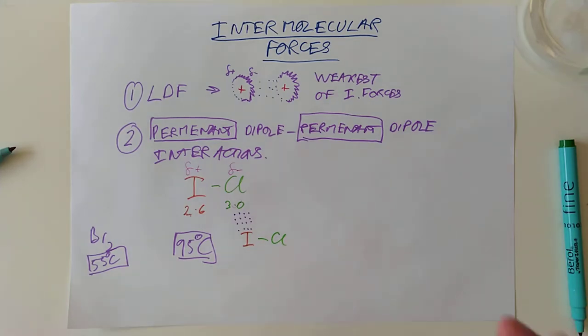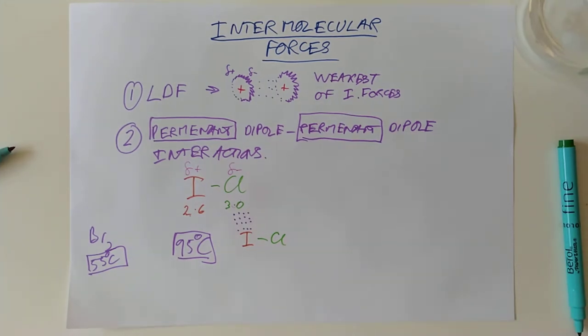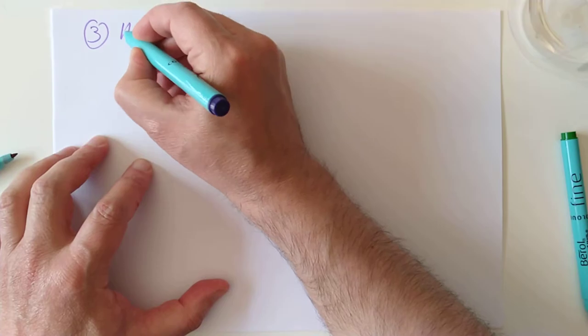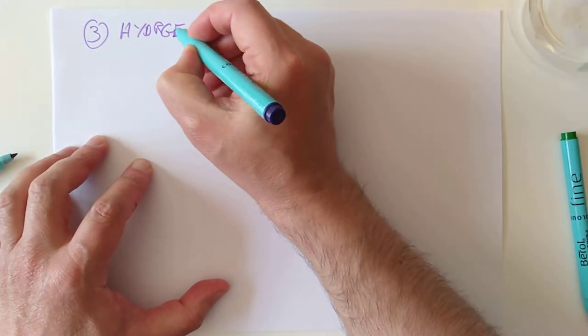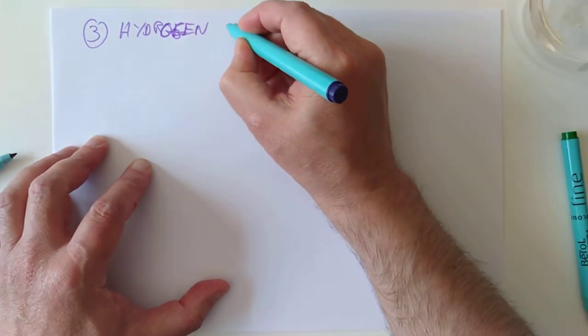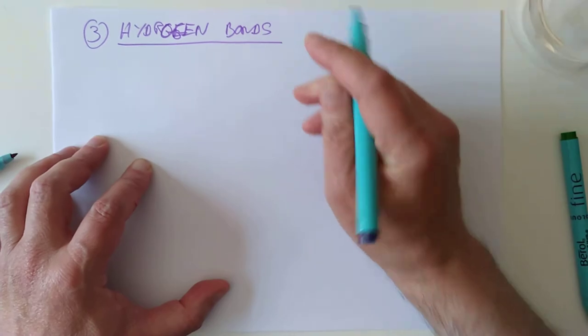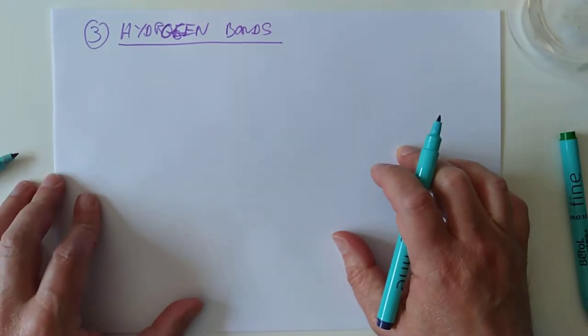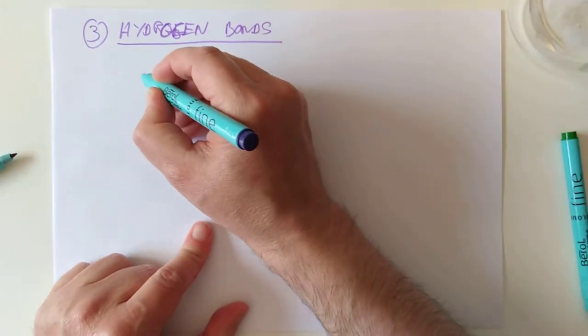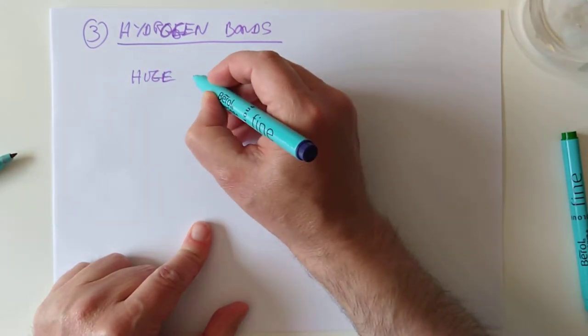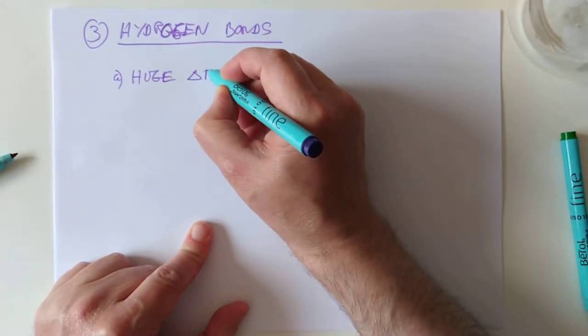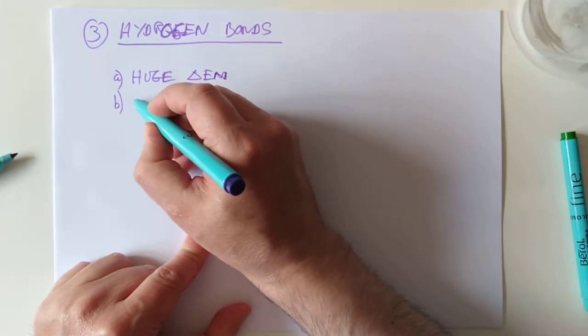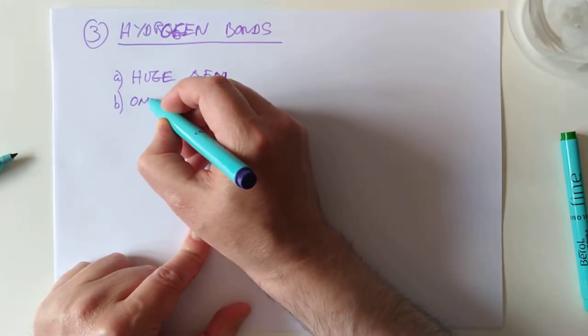So that's permanent-dipole, permanent-dipole interactions. You find them between polarised molecules. They're a fair chunk stronger than these. And let's do type 3 now. Type 3, ladies and gentlemen, are called hydrogen bonds. Where do they... What causes them? And what effect do they have? Well, what causes them is when you have two things, actually. Two conditions. A huge delta En. So there's a large difference in electronegativity. And also, one of the atoms involved is hydrogen.